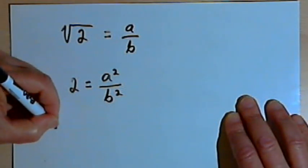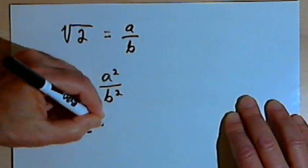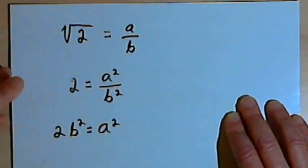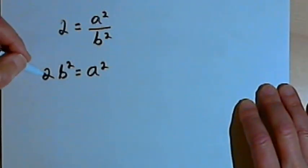And now I can multiply both sides of this equation, 2 equals a squared over b squared, by b squared. And I'm going to have 2b squared equals a squared. Now let's stop a second and make sure we understand what this implies.